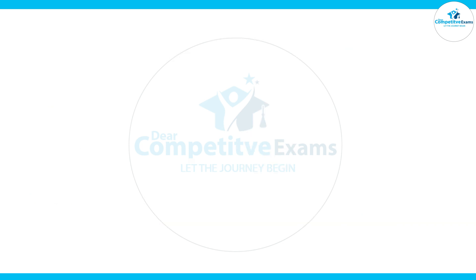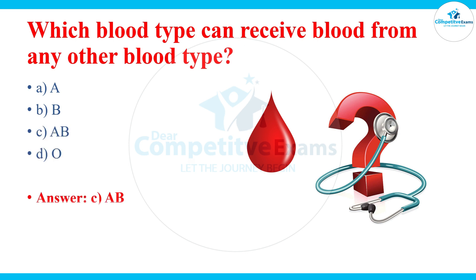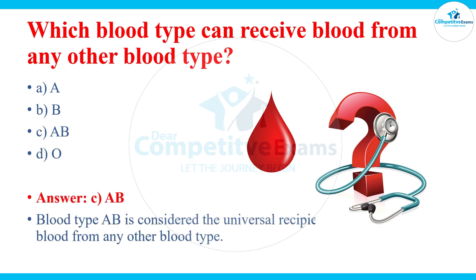Which blood type can receive blood from any other blood type? The options are A, B, AB, or O. The answer is AB — blood type AB is considered the universal recipient and can receive blood from any other blood type.